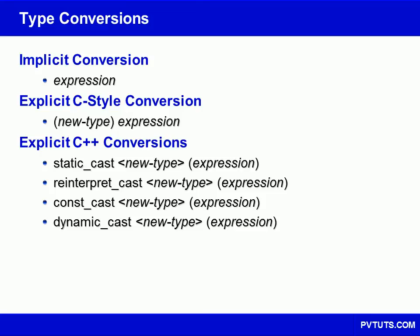Converting an expression from one type to another is known as type conversion. This can be done either implicitly or explicitly. An implicit conversion is performed automatically by the compiler when an expression needs to be converted into one of its compatible types.